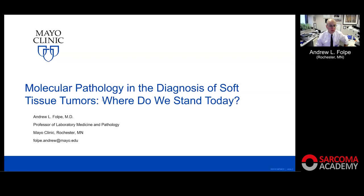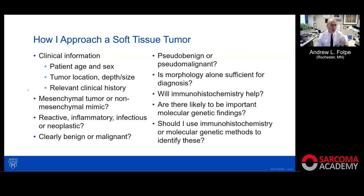Thank you very much, Josephine. Thank you, Bruno, for the invitation. I have a little bit of a cold, so if my voice starts to fall apart, I apologize in advance. As a pathologist approaching a soft tissue tumor, I want to know the patient age, sex, tumor location — deep or superficial — and size. I like to have clinical history. I know the clinicians will be surprised to know we want that, but it makes us very happy.